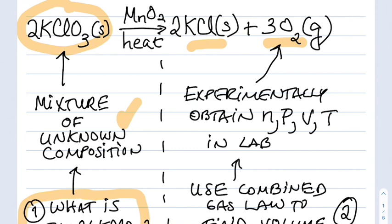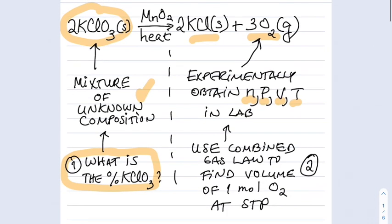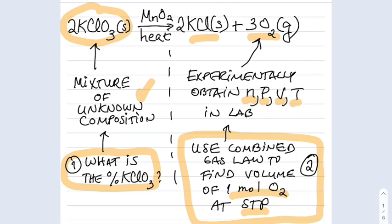To do this, we're going to experimentally measure the number of moles, the pressure, the volume, and the temperature in the lab of our oxygen gas. Then we're going to use the combined gas law to find the volume of one mole of oxygen at STP. STP is standard temperature and pressure — for us, that's going to be one atmosphere pressure, zero degrees Celsius.